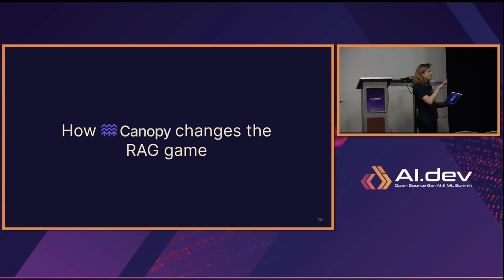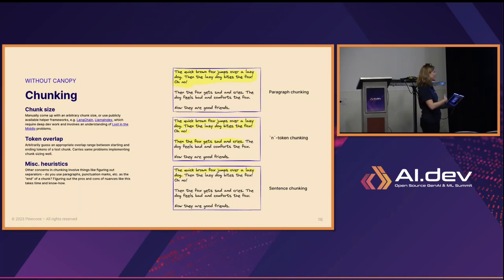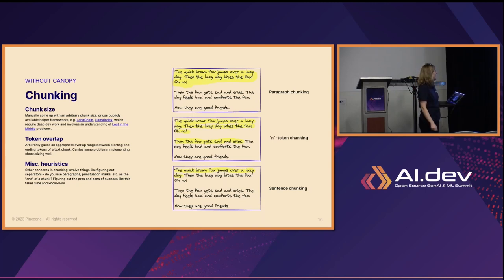Without Canopy, getting data into a good state is very annoying and creates a lot of ambiguity requiring research. You'd have to figure out your chunk size — divide text by paragraph, sentence, or n number of tokens — configure how many tokens overlap across chunks, and handle random decisions like whether to keep punctuation, split on line breaks, or keep those line breaks. There are lots of things to think about when you really just want to build LLM applications.